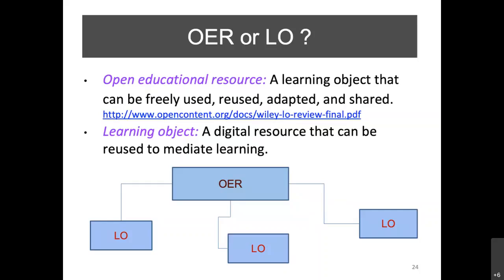Whereas an open educational resource can be freely used, adapted, and shared, a learning object is a digital resource that can be reused to mediate learning. With a learning object you use it as it is — there's typically no changing of the content, look, feel, or presentation. You can take multiple learning objects, assemble them together to create an OER, and if one isn't working you can replace it with another learning object or piece of media.